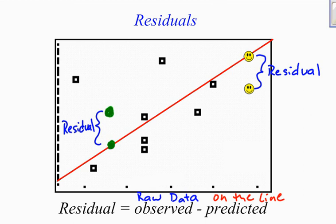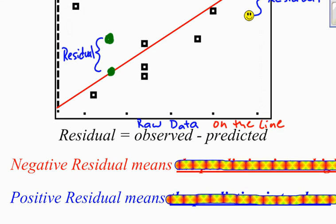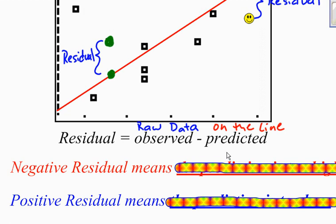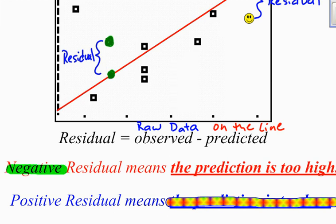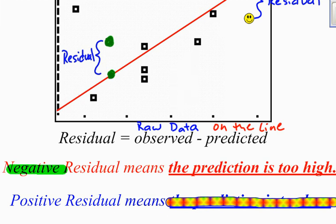So residuals are not that difficult. Now there's a couple other things you should know about residuals. You're going to get two types of residuals: either a positive residual or a negative residual. A negative residual means that the predicted value or your prediction is too high.